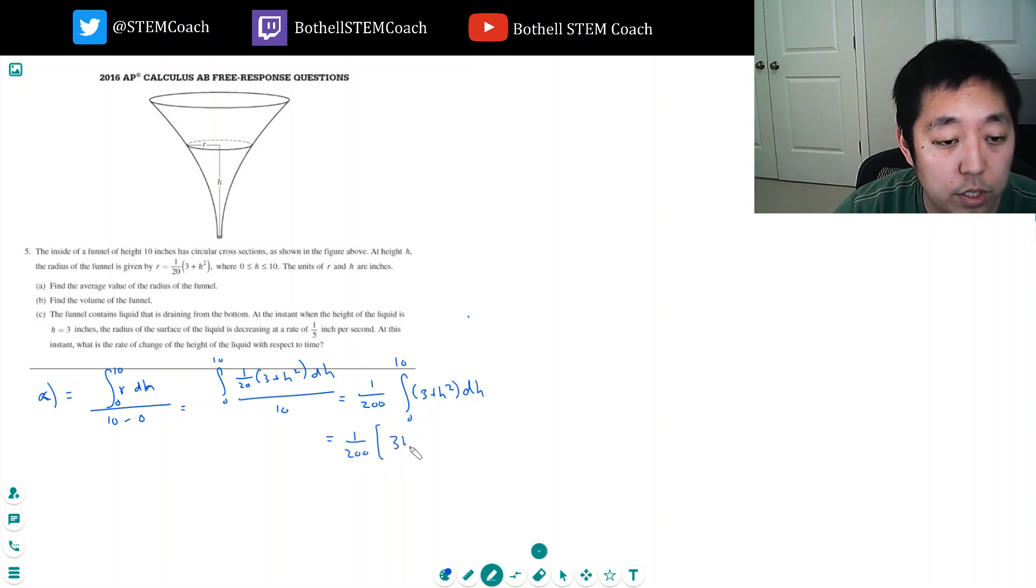This is 3h plus 1/3 h cubed, evaluated h equals 0 to 10. 1 over 200. When I plug in 0 nothing happens so I just need to plug in 10. So that's 30 plus a thousand divided by 3.